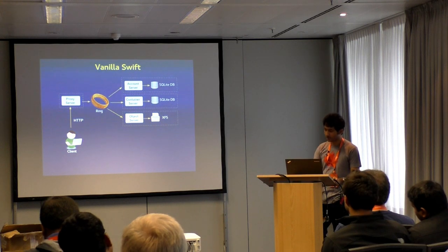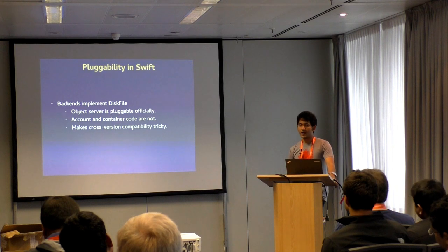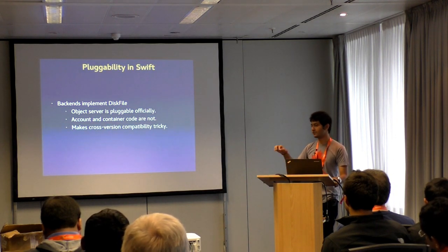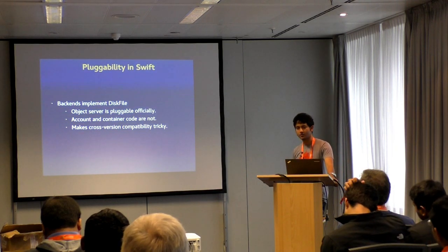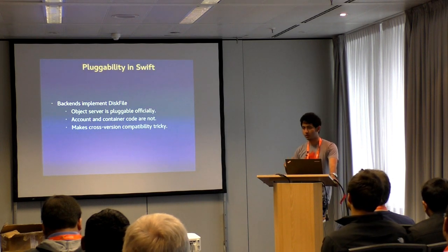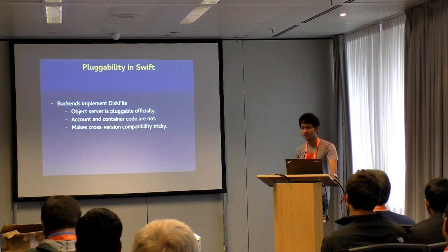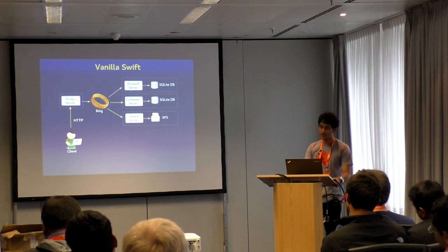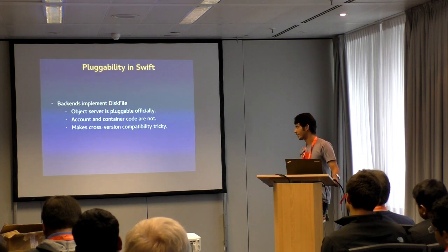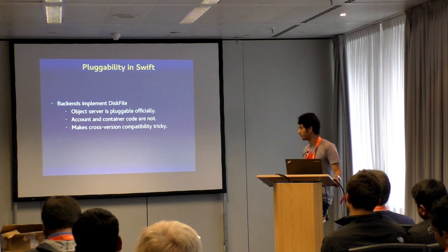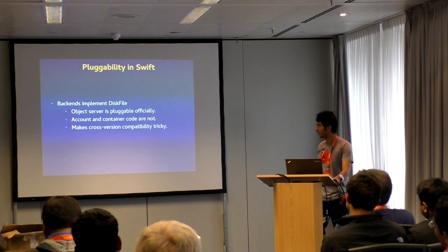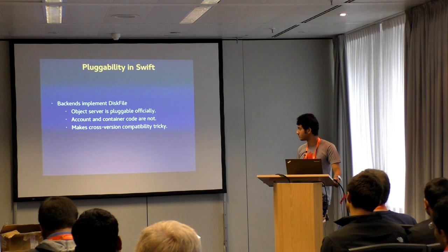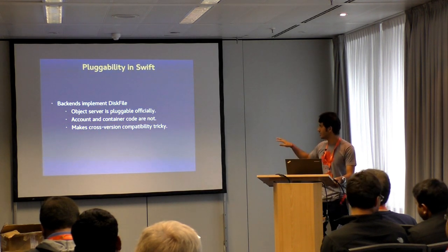Now let's see what we can do with Gluster. Swift is partly pluggable — similar to how NFS Ganesha has a FSAL (file system abstraction layer) that storage systems implement to plug in. Just as Gluster uses Ganesha for NFS v4 instead of writing its own implementation, here instead of writing our own object front end, we just use Swift. The object server part is officially pluggable, but we also override some of the container and account server parts to get rid of the DB interactions. Since it's Python, doing those overrides is easy.